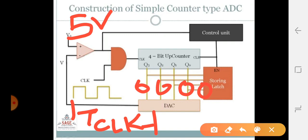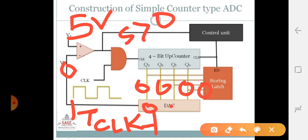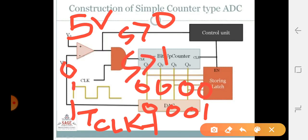Initially when the counter is at 0-0, it will be converted to analog, and we will get 0 volts. So the comparator will compare: since 5 volts is greater than 0, counting continues. On the next clock it will be 0-0-1, then this will be compared — 5 is greater than 1.